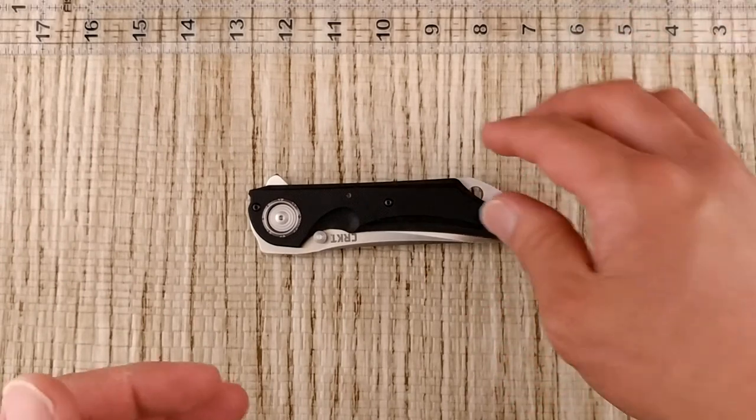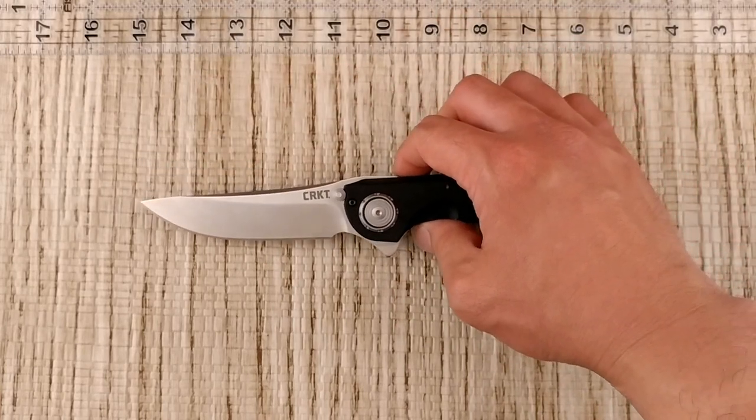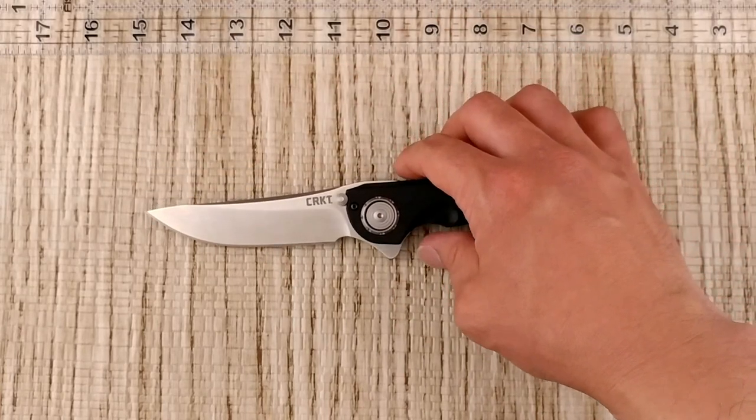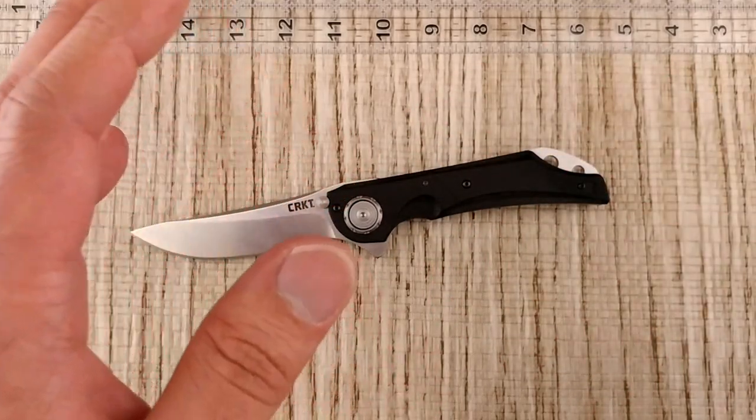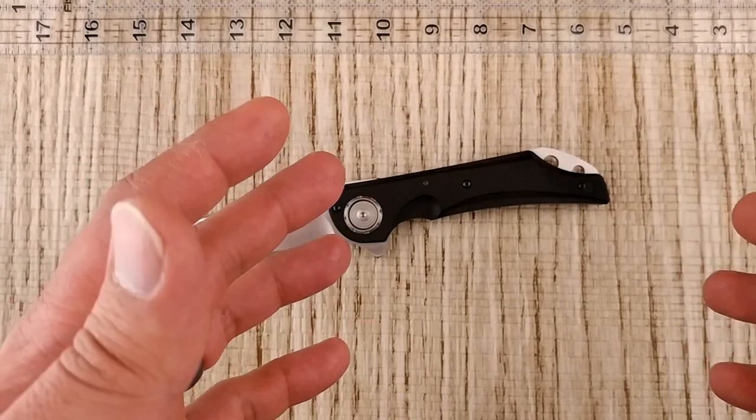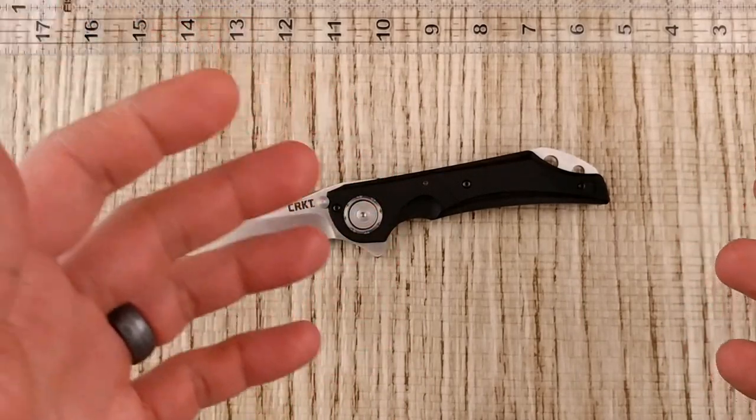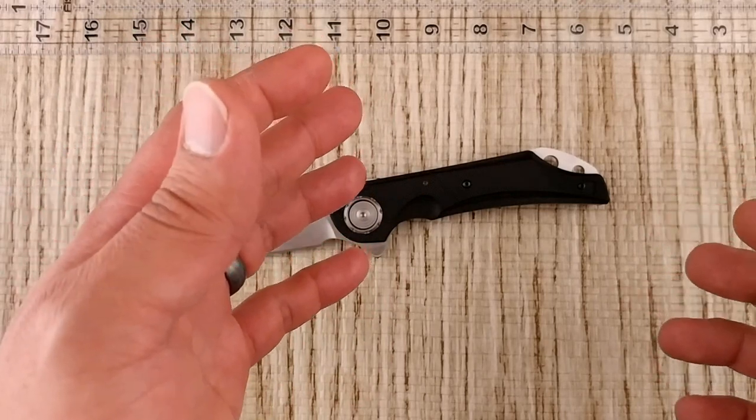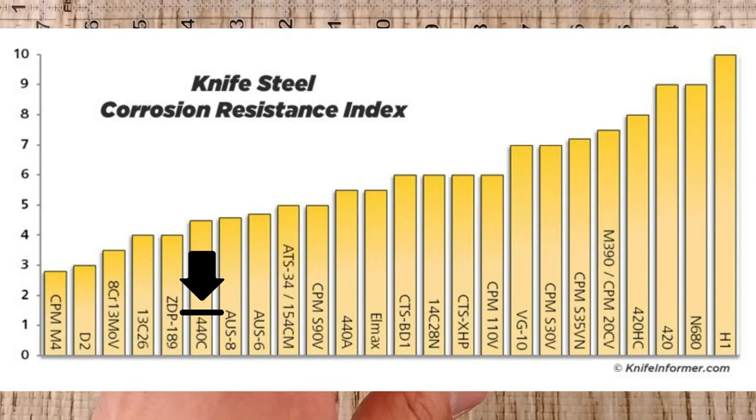This one here is in a different steel than most. It's actually 1.4116, and from what I can tell that's like a 440B steel. I gave it on the chart as far as like a 440C. I might be a little bit off on that one as far as where it sits, but for corrosion resistance it's going to be at 24th percentile.